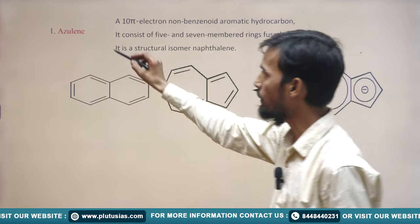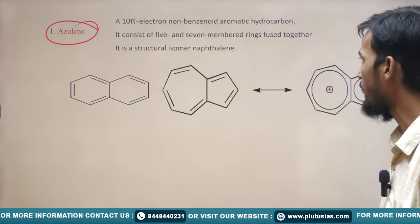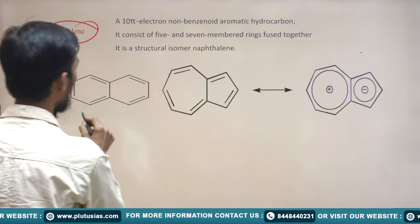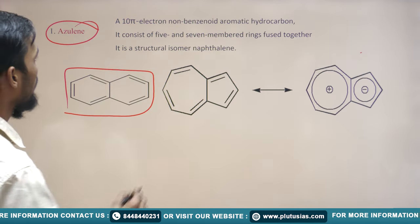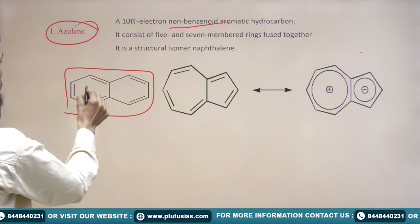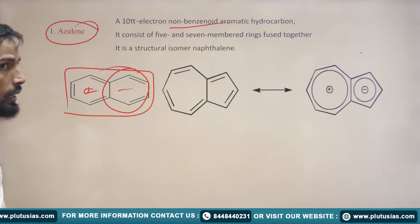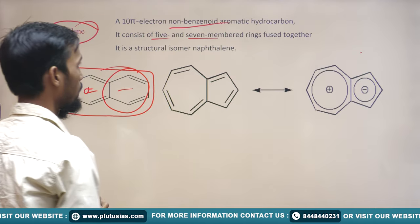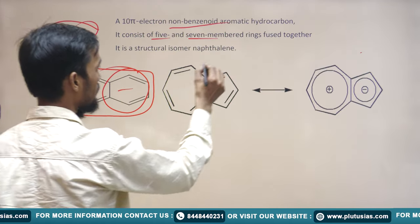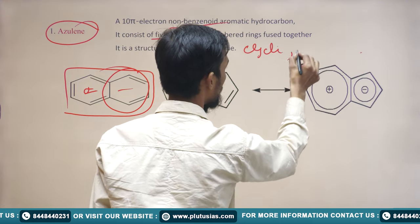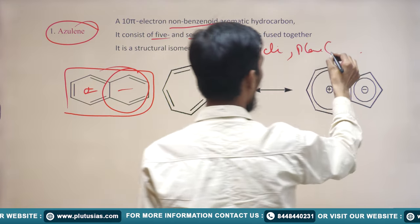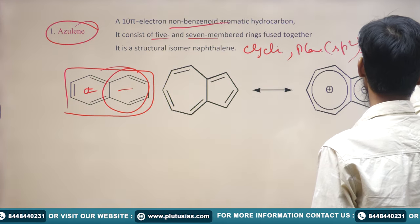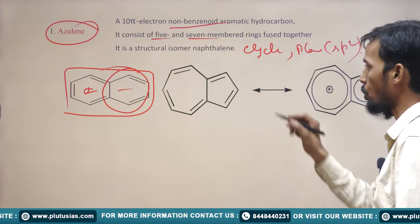Coming to our first question — Azurine. As we know, this compound is an isomer of azulene. It is a non-benzenoid compound, which means it does not contain a benzene ring. It is a 5-membered and 7-membered fused ring together. Coming to whether it is aromatic or not: the first condition is that it is cyclic — very clear. It is planar because it has all sp2 hybridized orbitals. The third condition, complete conjugation, is also fulfilled — all adjacent atoms have alternating single and double bonds.